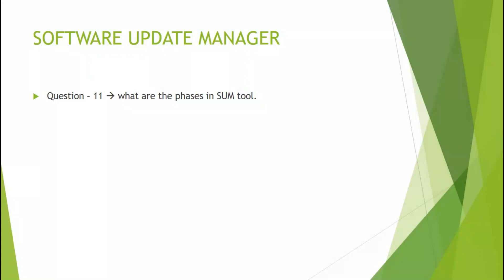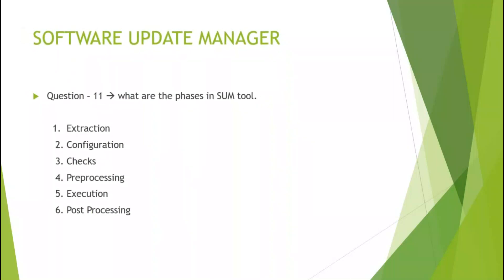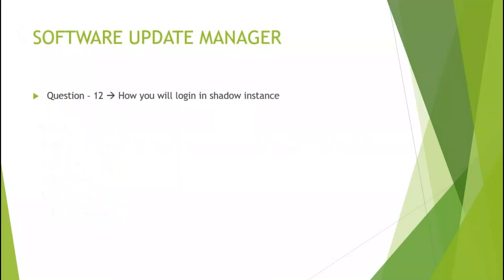In SUM tool we have six phases: Extraction, Configuration, Checks, Pre-processing, Execution, and Post-processing. This is the only flow — it starts from Extraction and goes till Post-processing.